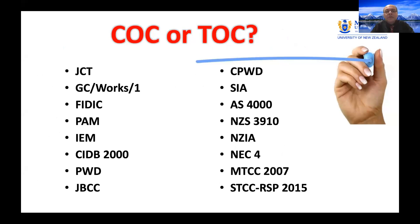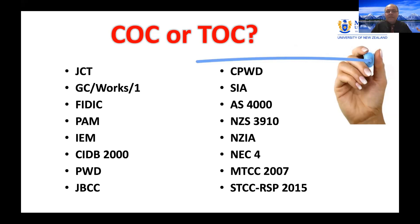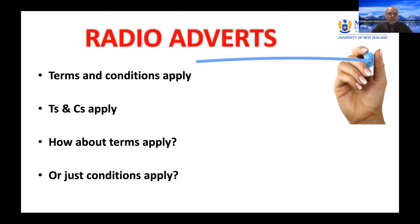How about calling it TOC — Terms of Contract — instead of COC, Conditions of Contract? Terms covers everything: conditions, warranties, and so on. Looking at standard forms around the world — JCT, GC Works 1, FIDIC, PAM, IEM Malaysia, CIDB 2000, PWD, JBCC South Africa, CPWD India, SIA Singapore, AS 4000 Australia, NZS 3910, NEC 4, Model Terms of Construction Contract 2007, and SDCC RRSP — most call them conditions of contract. Two exceptions are MTCC 2007 and SDCC RRSP 2015, both freely downloadable, which correctly call them 'terms of contract.'